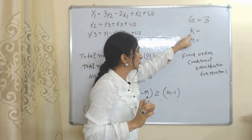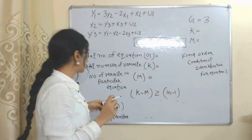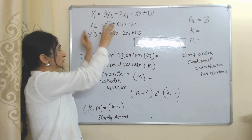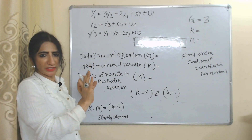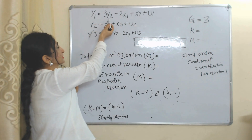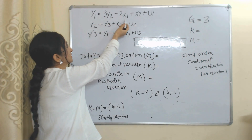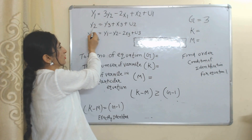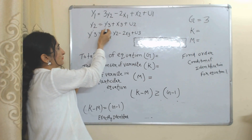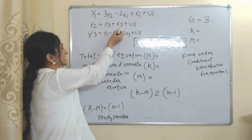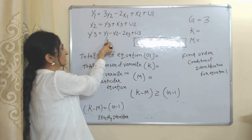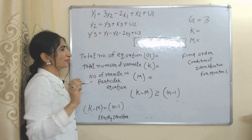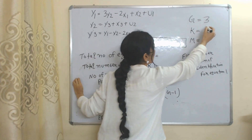Now we will find K. K means the total number of variables in the model. Counting all variables across the model — Y1, Y2, Y3, X1, X2, X3 — we have a total of 6 variables. So K equals 6.